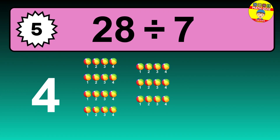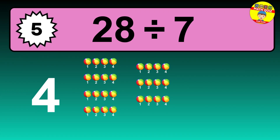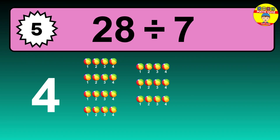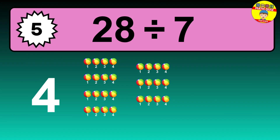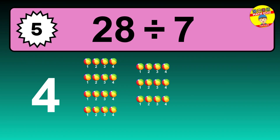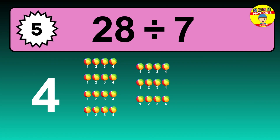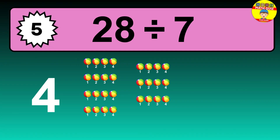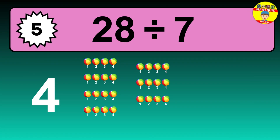Let's go to the solution. Divide the number 28 by 7. Each group contains 7 units, so dividing 28 by 7 results in 4 equal groups. Thus, 28 divided by 7 equals 4.